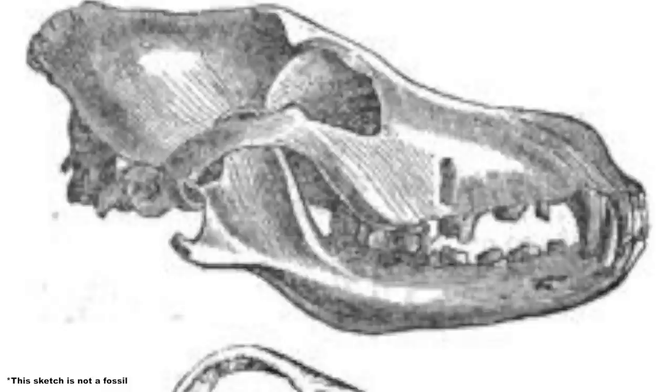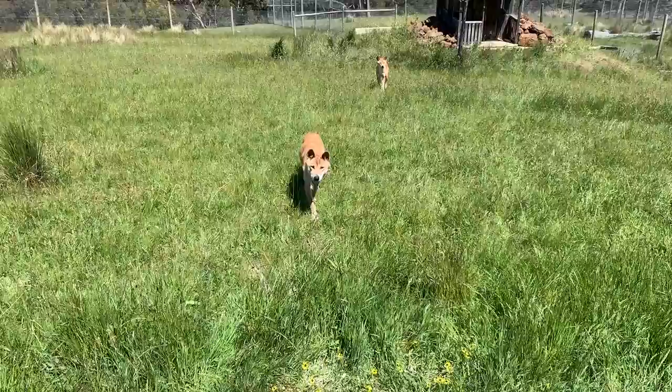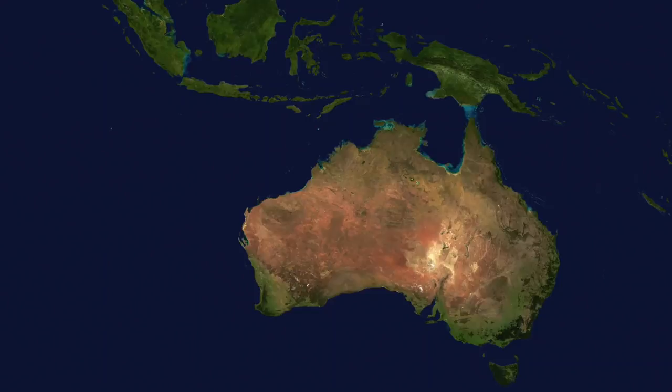Dingo fossils as old as 3,500 years have been found in Australia, so we know for sure that dingoes arrived in Australia before then. Although it is really hard to find fossils in some biomes because they don't get preserved very well, so dingoes probably arrived in Australia even earlier.